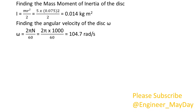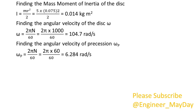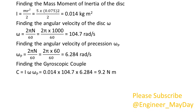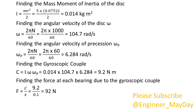Finding the angular velocity of the disc omega: omega equals 104.7 radians per second. Finding the angular velocity of precession omega p: omega p equals 6.284 radians per second. Finding the gyroscopic couple: C equals 9.2 Nm. Finding the force at each bearing due to the gyroscopic couple: F equals 92 N.